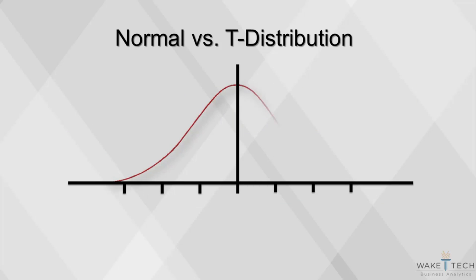A t-distribution will approach a normal distribution for larger n greater than or equal to 100, but it has fatter tails for smaller n less than 100.